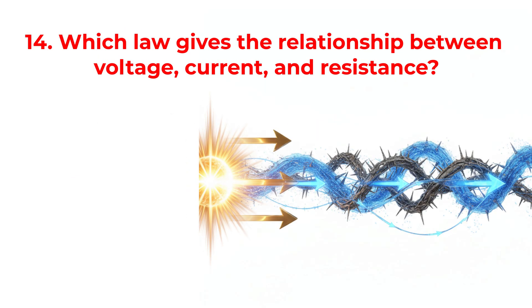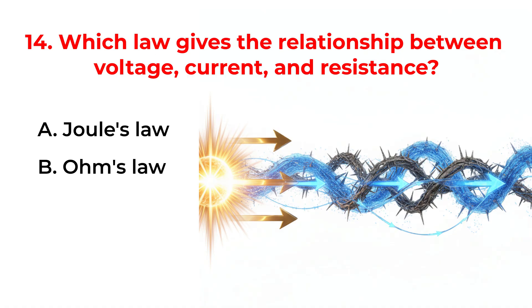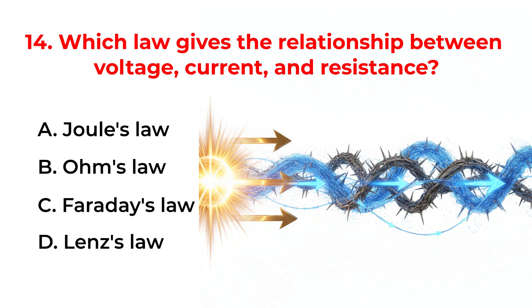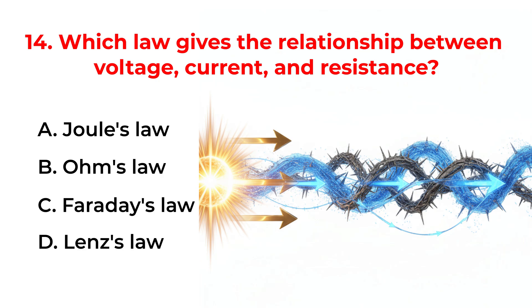Which law gives the relationship between voltage, current, and resistance? A. Joule's law. B. Ohm's law. C. Faraday's law. D. Lenz's law. Correct answer is option B. Ohm's law.